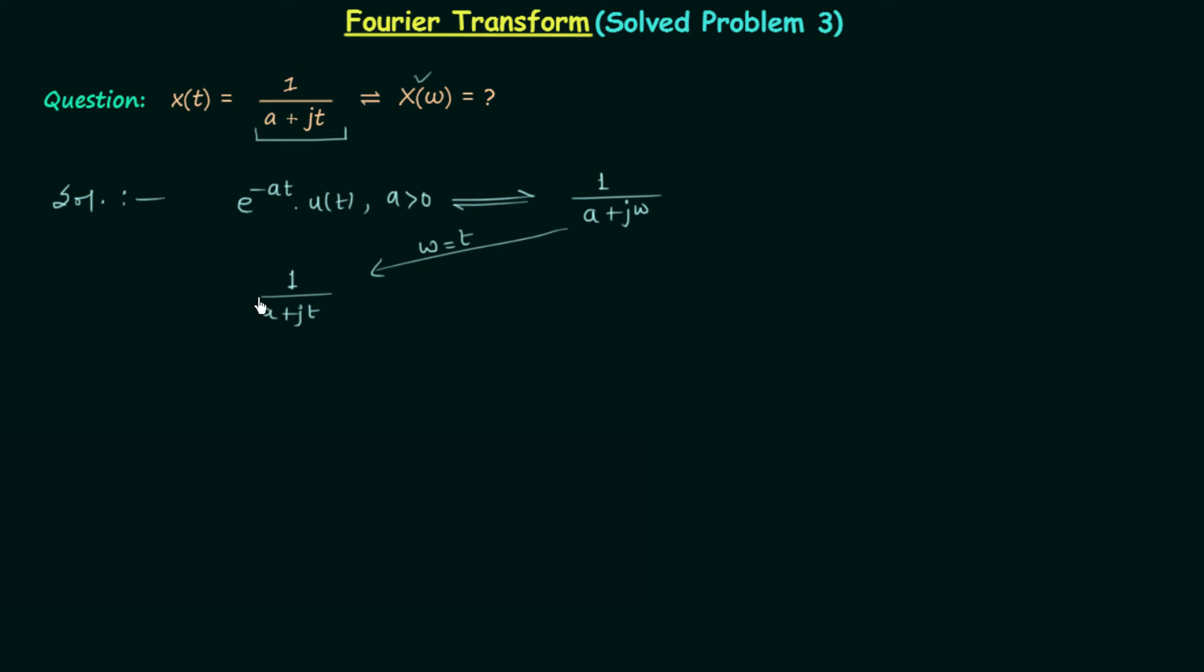So in this way we have the time domain signal 1 over a plus jt, and from the duality property we can say that 1 over a plus jt will have the Fourier transform 2π multiplied to this time domain signal when t is replaced by minus ω.